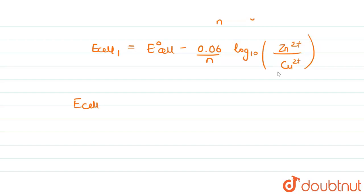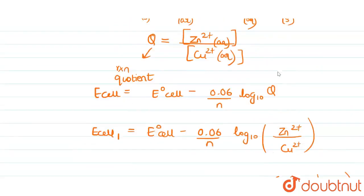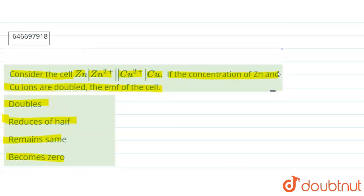So for second case what is given, we will use E naught cell minus 0.06 upon N into log to the base 10 into concentration of Zn2+ that is mu upon concentration of Cu2+ mu. So what we get over here is that the concentration of Zn and Cu ions are doubled.